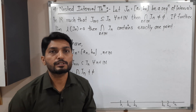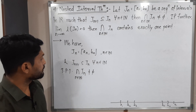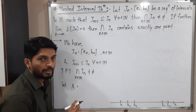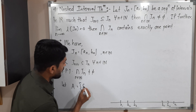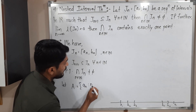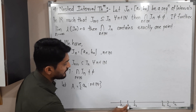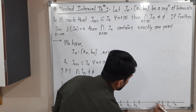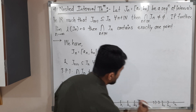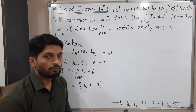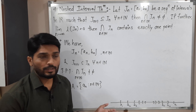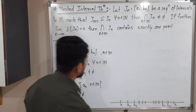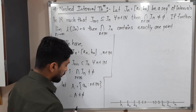Now I am going to define one set: A is the set of all a_n's where n belongs to the set of natural numbers. That means A contains a_1, a_2, a_3, a_4, and so on — all the left endpoints. There are infinitely many such points, so A is non-empty.